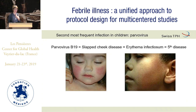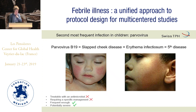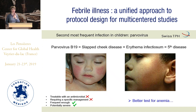Number two was parvovirus — the fifth disease, or slapped cheek disease, erythema infectiosum. It gives red cheeks — again, harder to detect on dark skin. This is generally mild but can cause some anemia. Should we test for that virus? I think we should just test for anemia. If children have serious anemia, we have to do something — refer for transfusion, give iron. Probably not worth testing specifically for that virus either.